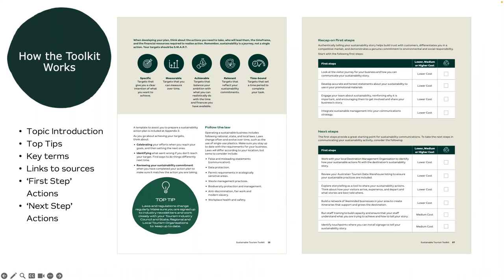How to use the toolkit: it sets out practical advice, guidance and actions your business can take to improve practices across the four pillars of sustainability. A great tip is to use it like a toolbox — jumping in to find the tool you need for a particular aspect of your business. It has great advice for all levels across the sustainability journey, from beginner through to advanced. In each section you'll find a topic introduction, key terms, links to sources, a glossary, and first and next step actions.